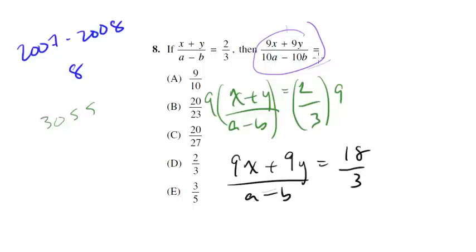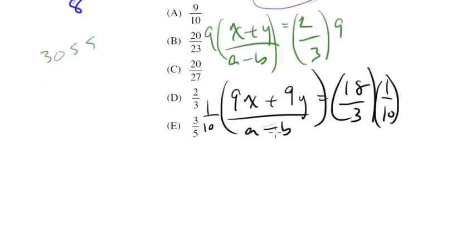Well, I want to get 10 on the bottom, so let me multiply both sides by 1/10. Again, I'm doing the same thing to both sides, so I'm not breaking any rules, and I'm getting 10 on the bottom, which is what I want.